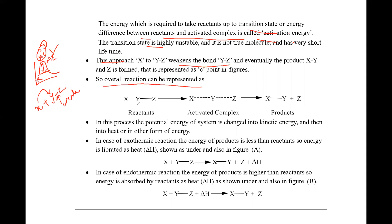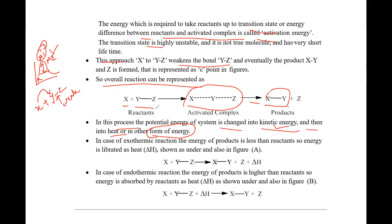Overall, the reaction can be represented as X plus YZ forming an activated complex for a short time, which is then converted into product XY. In this process, the potential energy of the system is converted into kinetic energy and then into heat or other forms of energy. The energy of the product is less than that of the reactant in exothermic reactions.